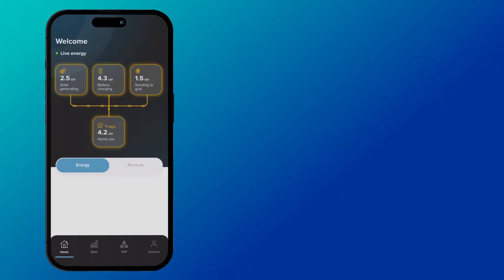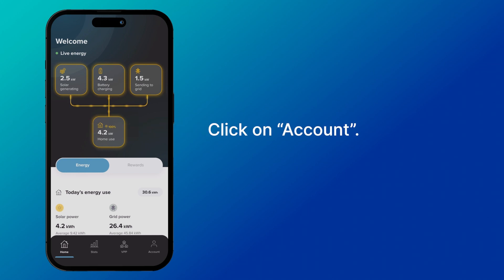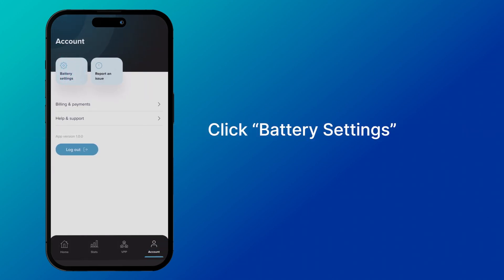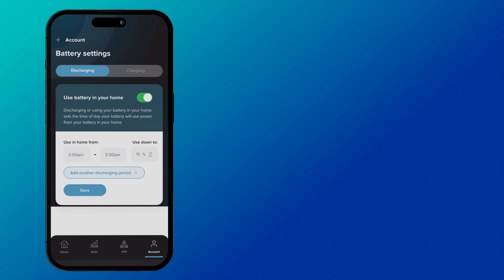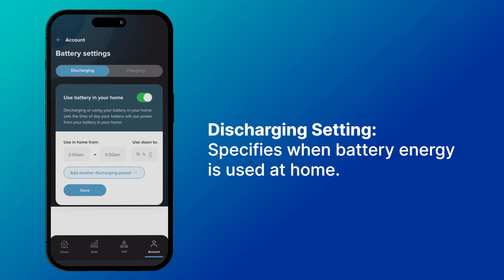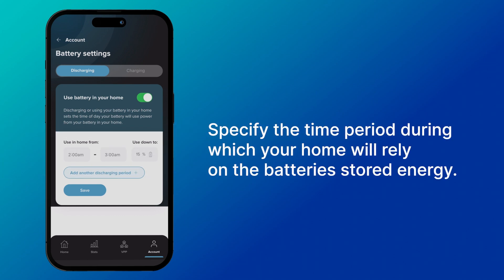The battery discharging and charging settings control how your battery interacts with your home's power usage and grid charging. Here's a breakdown of these settings. Discharging setting: this setting determines when the power stored in your battery will be used to supply electricity to your home. By configuring the discharging setting, you can specify the time period during which your home will rely on the battery's stored energy.